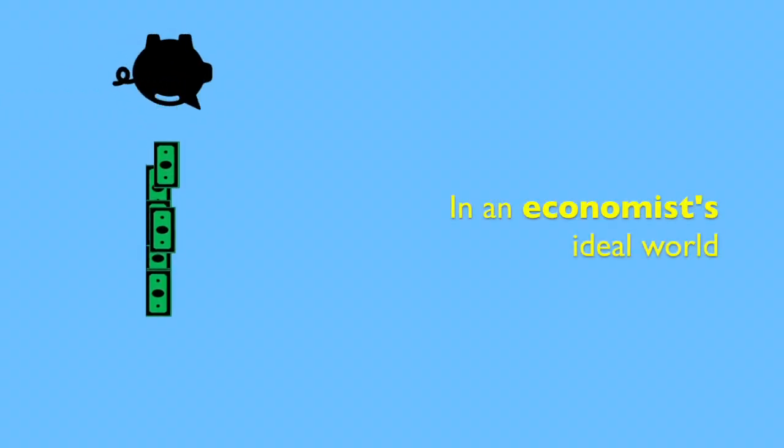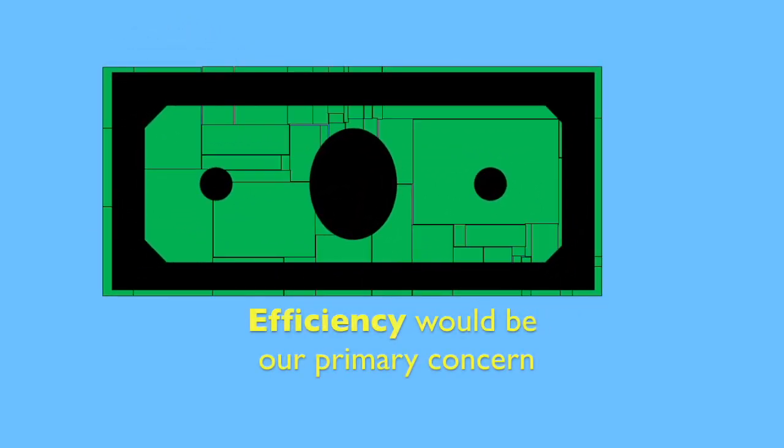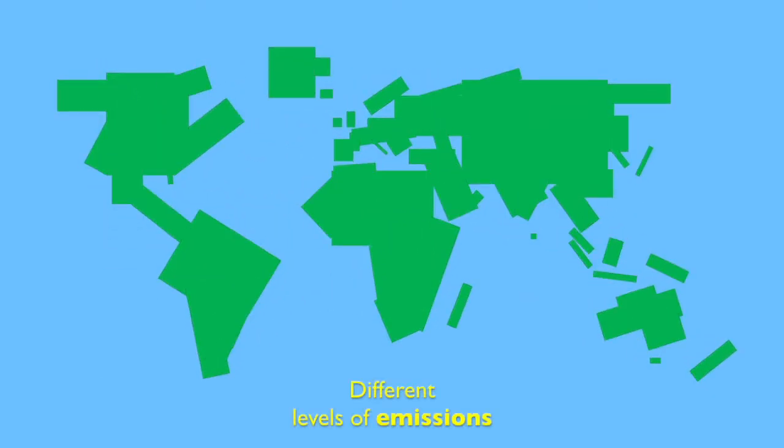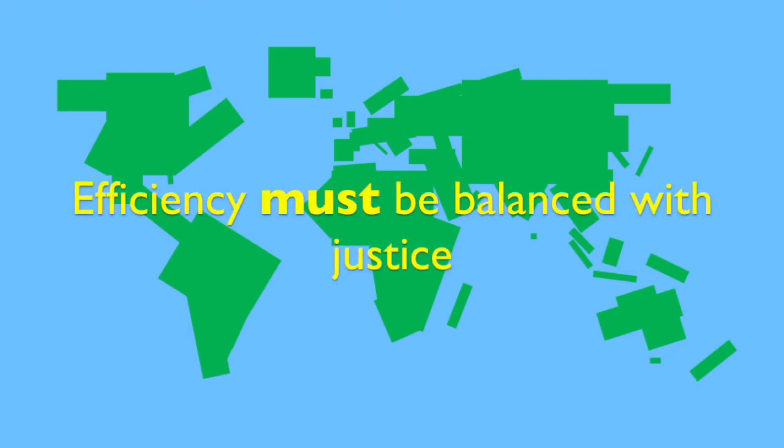But making these decisions is not easy. In an economist's ideal world, where taxes still exist, efficiency would be our primary concern. But the world is messy. Different countries have different abilities to pay, and have released different levels of emissions, leading to different levels of responsibility. Efficiency must be balanced with justice, or equity.